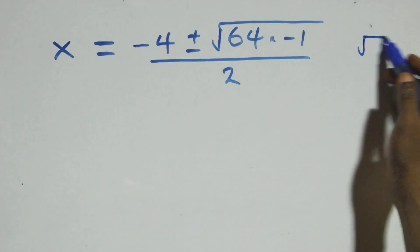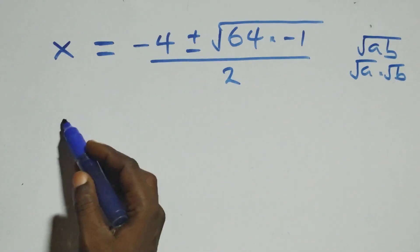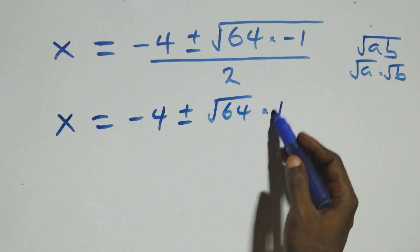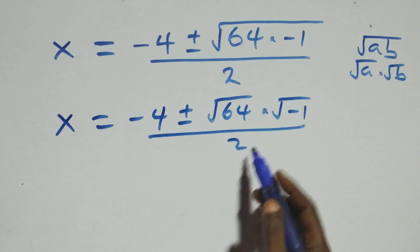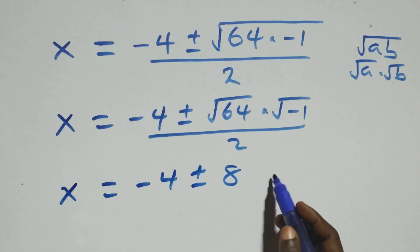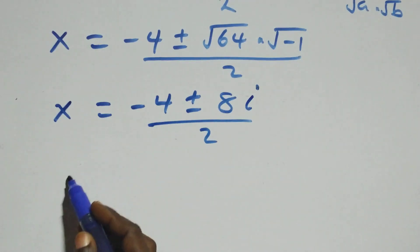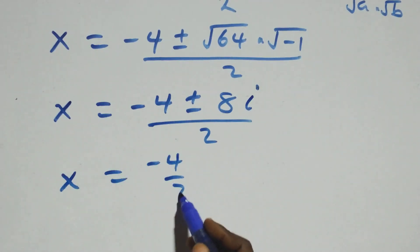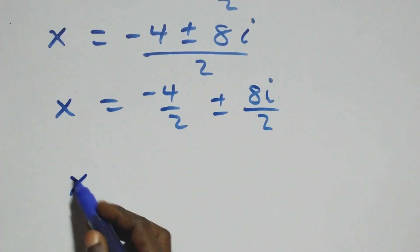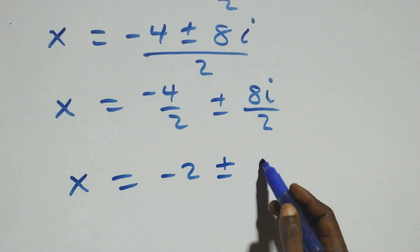Using the property that root of a times b equals root a times root b, we separate this as square root of 64 times square root of minus 1. Root 64 is 8, and root minus 1 is i. So x equals minus 4 plus or minus 8i, all over 2, which separates into minus 4 over 2 plus or minus 8i over 2, giving x equals minus 2 plus or minus 4i. These are two complex solutions.